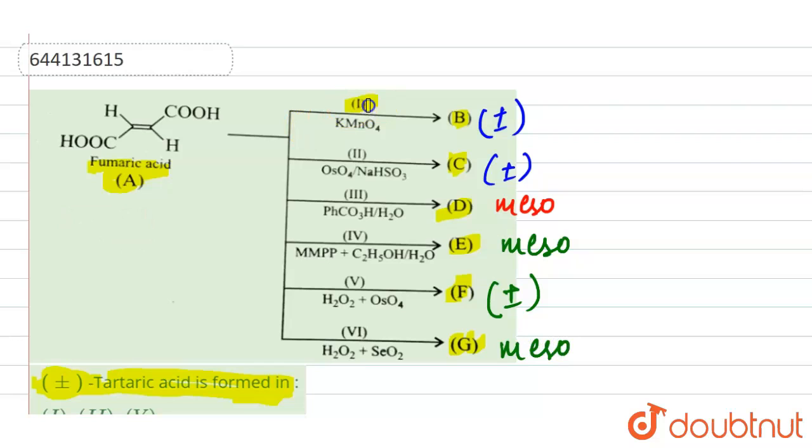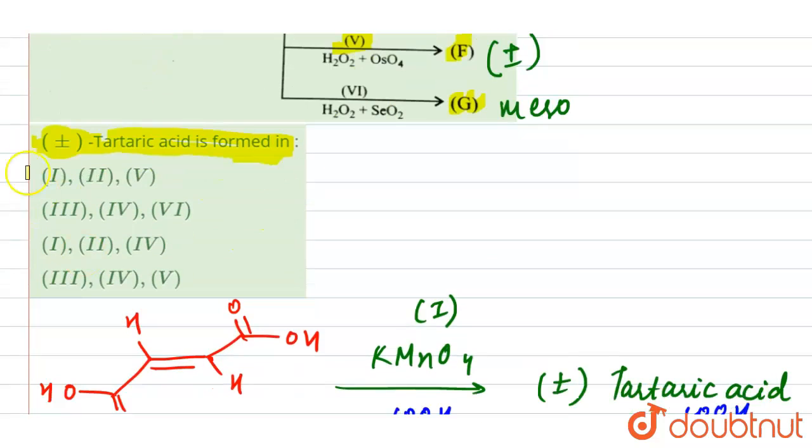So if we see, then plus-minus is formed in first, second, and the fifth. So that will be our answer. Here, if we see, first, second, and fifth is in the first option, so that is correct. This is incorrect. Here we have four, this is incorrect. It is also incorrect. So correct answer is this one. This is our correct answer. Thank you.